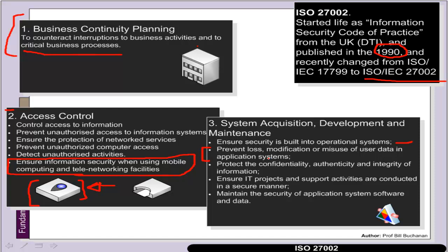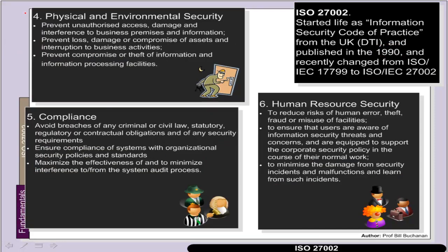Another clause relates to system acquisition, development, and maintenance, which tries to ensure that systems are built on a secure infrastructure and prevents loss, modification, or misuse of user data to protect the confidentiality, authenticity, and integrity of information. It ensures that IT projects are run in a secure manner. Clause 4 is physical and environmental security, which tries to stop unauthorised physical access to systems and data. Clause 5 is compliance — ensuring the organisation complies with any criminal or civil law and its statutory or contractual obligations.